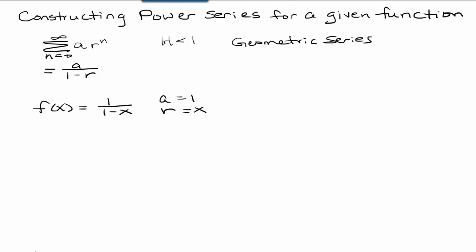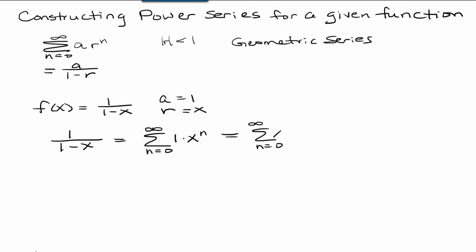So we're going to look at this function f of x equals 1 over 1 minus x, and we're going to compare it to a over 1 minus r. If a function equals 1 over 1 minus x, notice that fits the pattern if a is 1 and r is x. So what we could say is that this 1 over 1 minus x expression is actually the sum of a convergent power series of the form n equals 0 to infinity of 1 times x to the n, or just the sum n equals 0 to infinity of x to the n, provided that the absolute value of x is less than 1. So when the absolute value of x is less than 1, this series converges to 1 over 1 minus x.